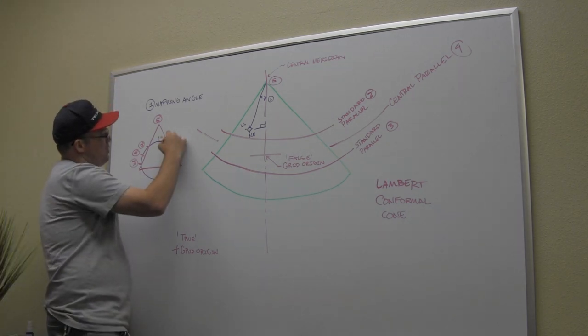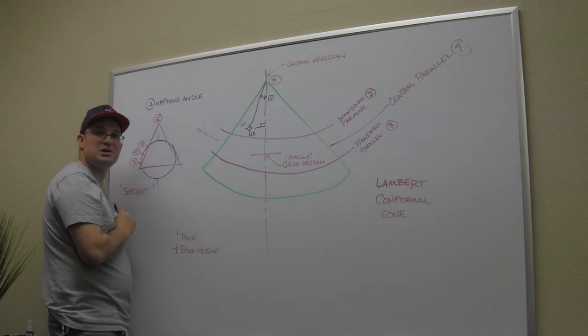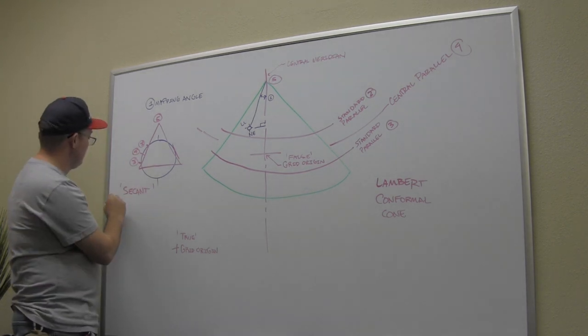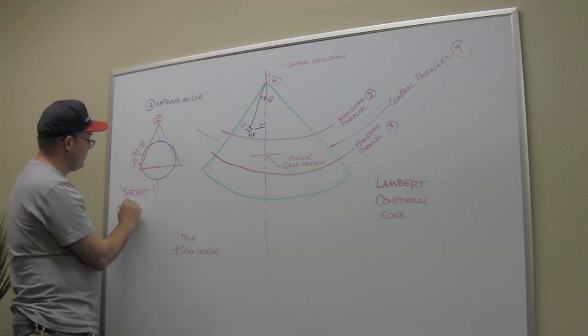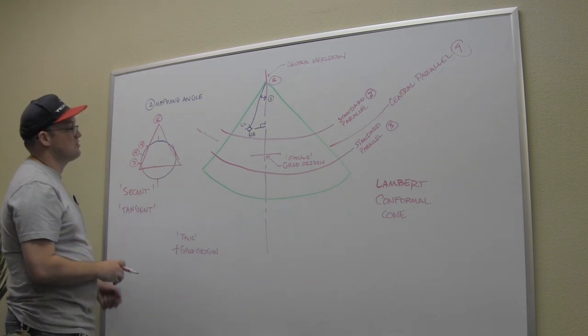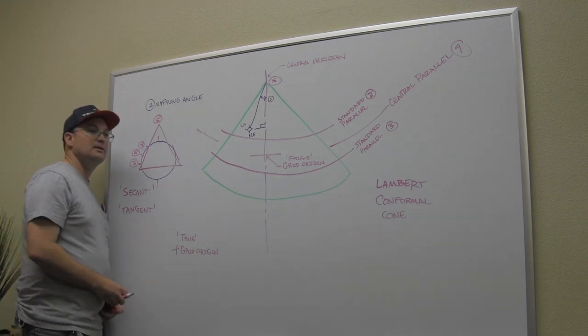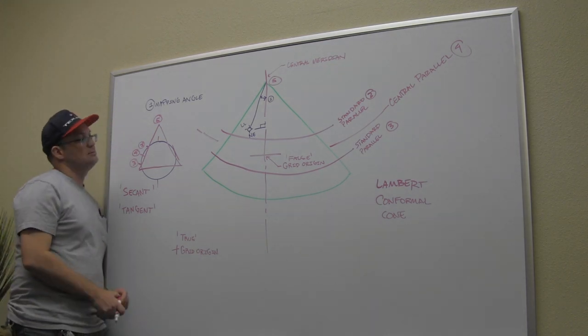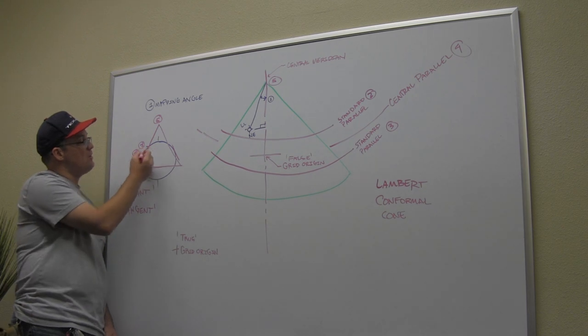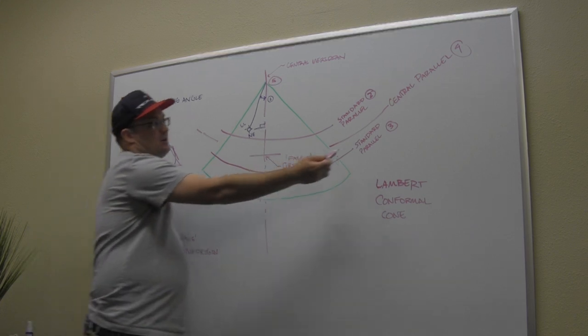I'm going to give you a couple more important terms. When you have a projection like this that cuts through the earth, that's called a secant projection. Secant means cut through. If you have a projection where this cone laid on the surface and just connected at a dot, what kind of projection is that? Tangent. That's a tangent projection. We are not tangent, we are secant.